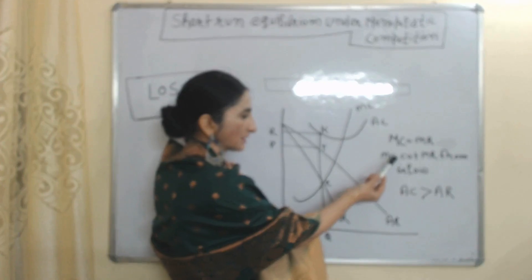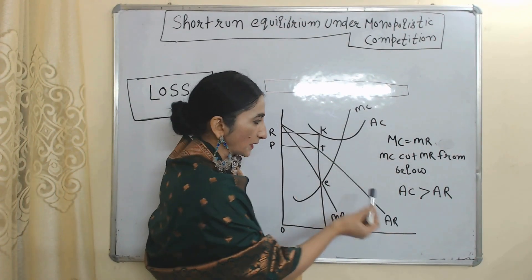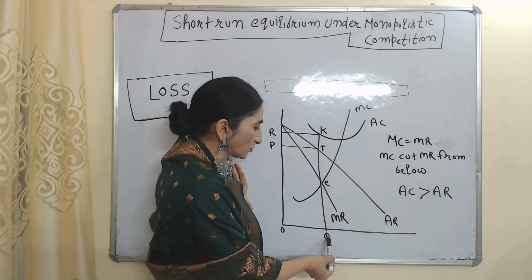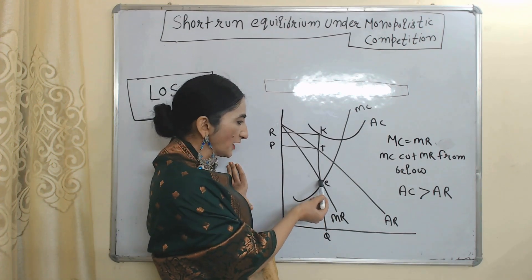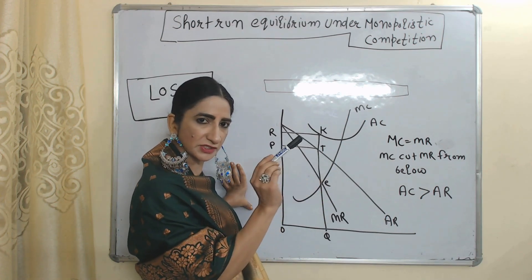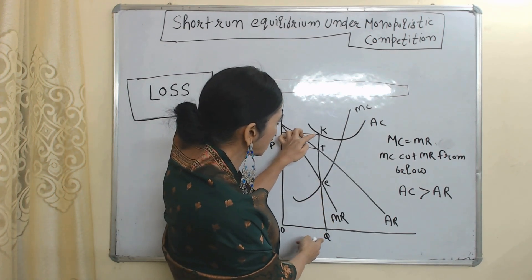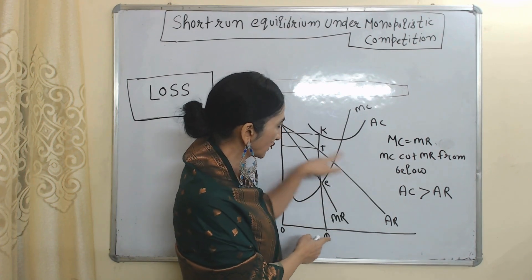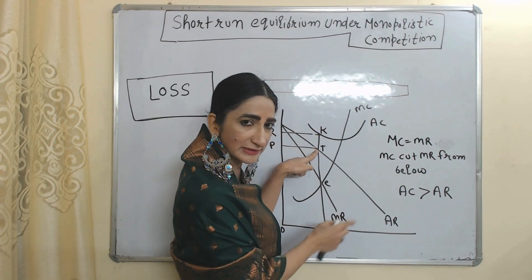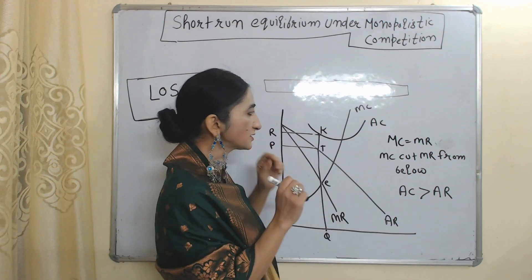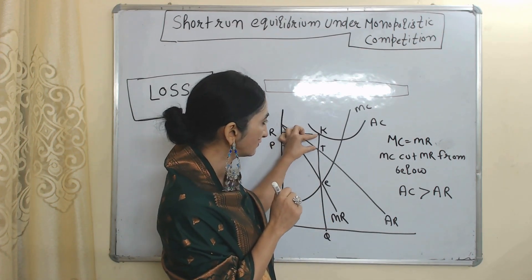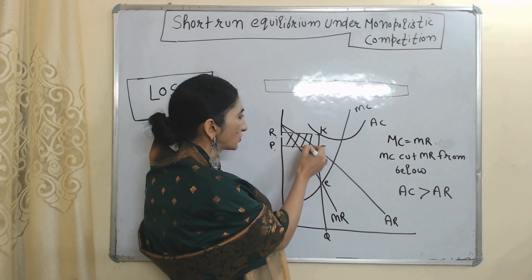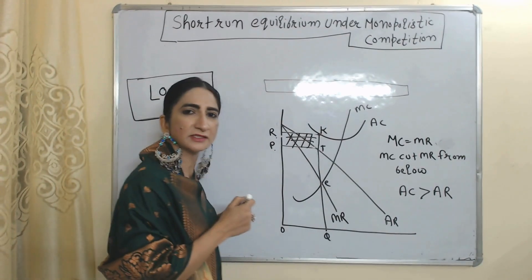Now we are going to talk about loss. Two conditions remain the same: MC equals MR, and MC cuts MR from below. In the case of loss, average cost is more than average revenue. At point E, OQ amount of output is giving us loss. KQ is our average cost and TQ is our average revenue. KQ is more than TQ, meaning average cost is more than average revenue. The difference KT is called per unit loss, and the whole area PRKT is called total loss.